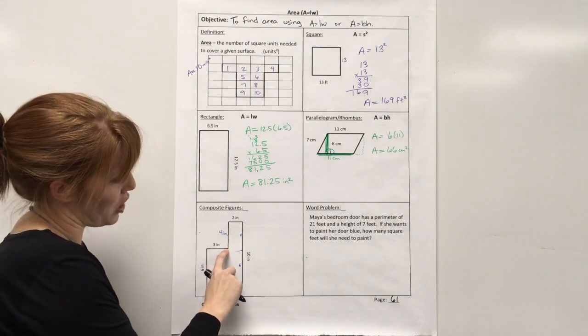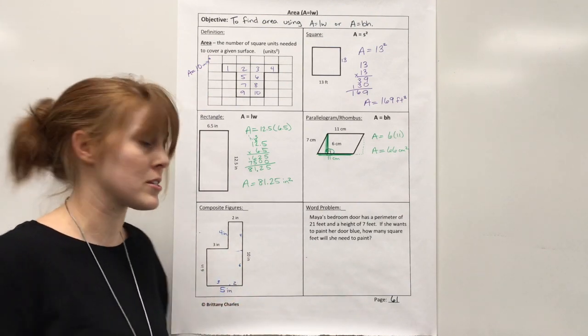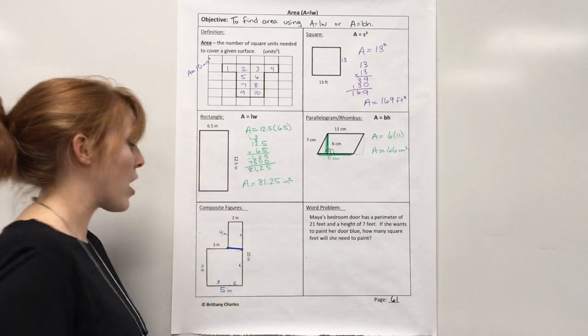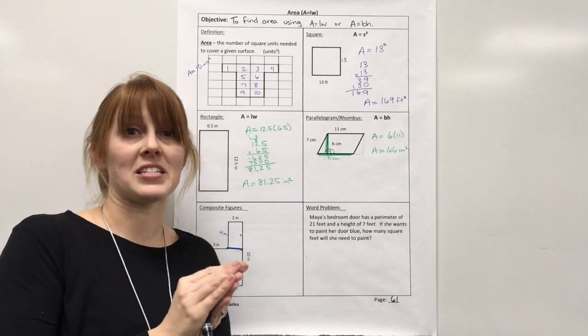So, I'm going to want to chop this figure up so that I have rectangles. Well, you could either chop it right here or you could chop it right here. Up to you. It's really personal preference. I'm going to go ahead and just chop it right here. So, now, I'm going to find the area of this piece and then I'll find the area of this piece and then at the end I'll add that together.